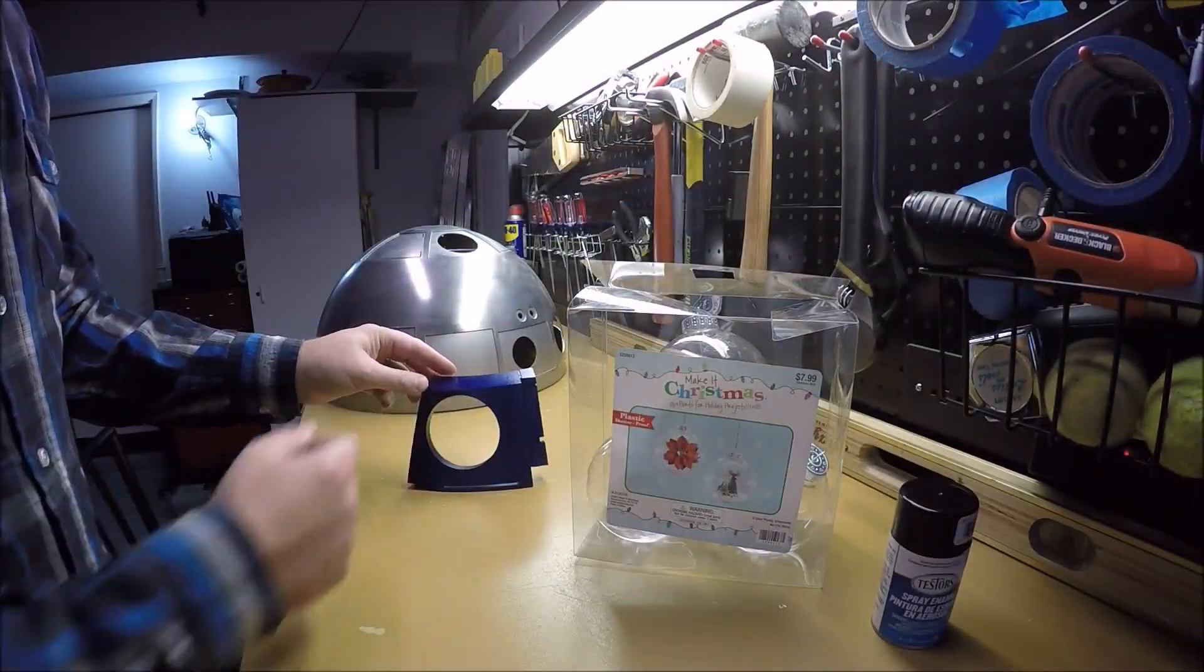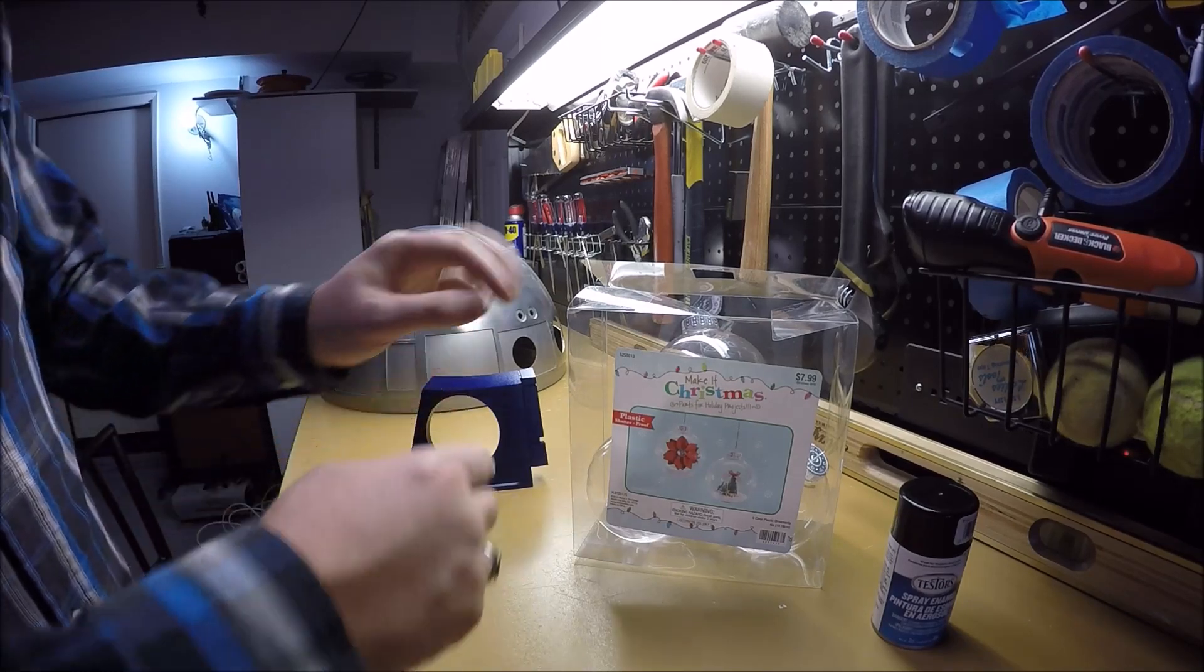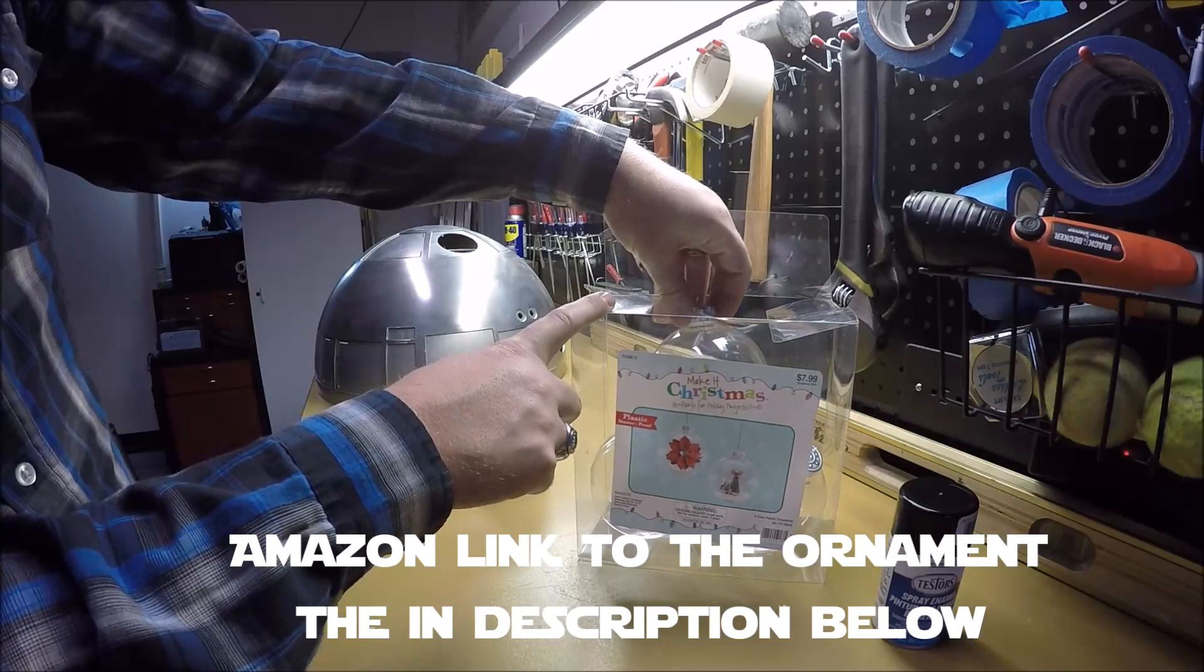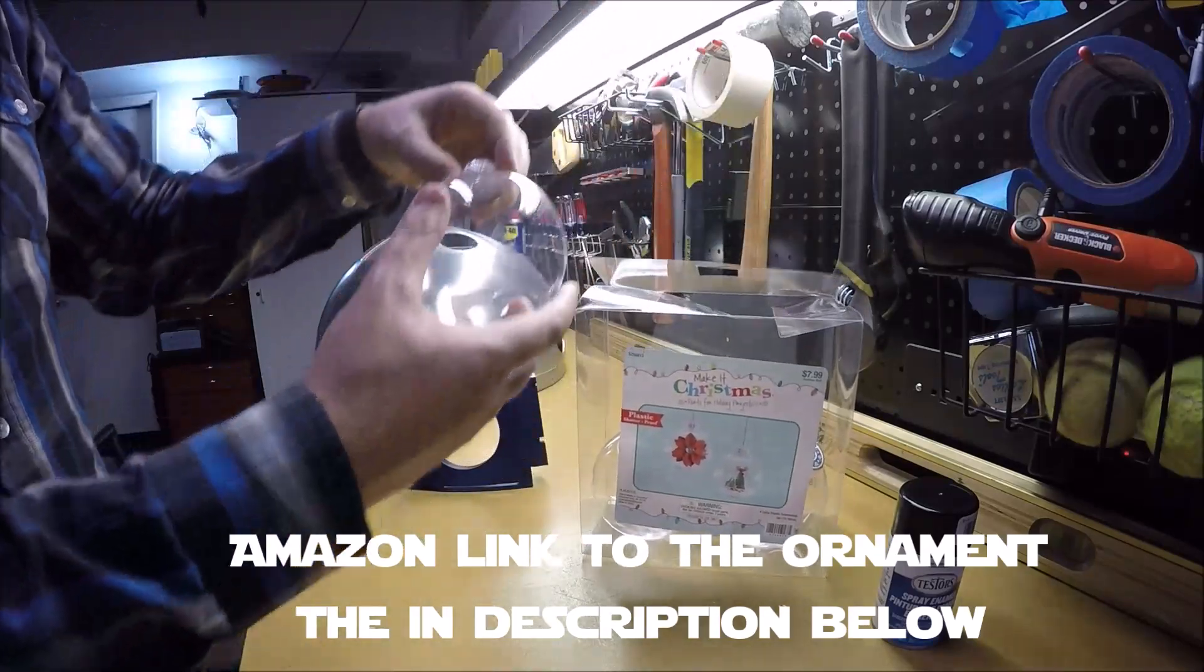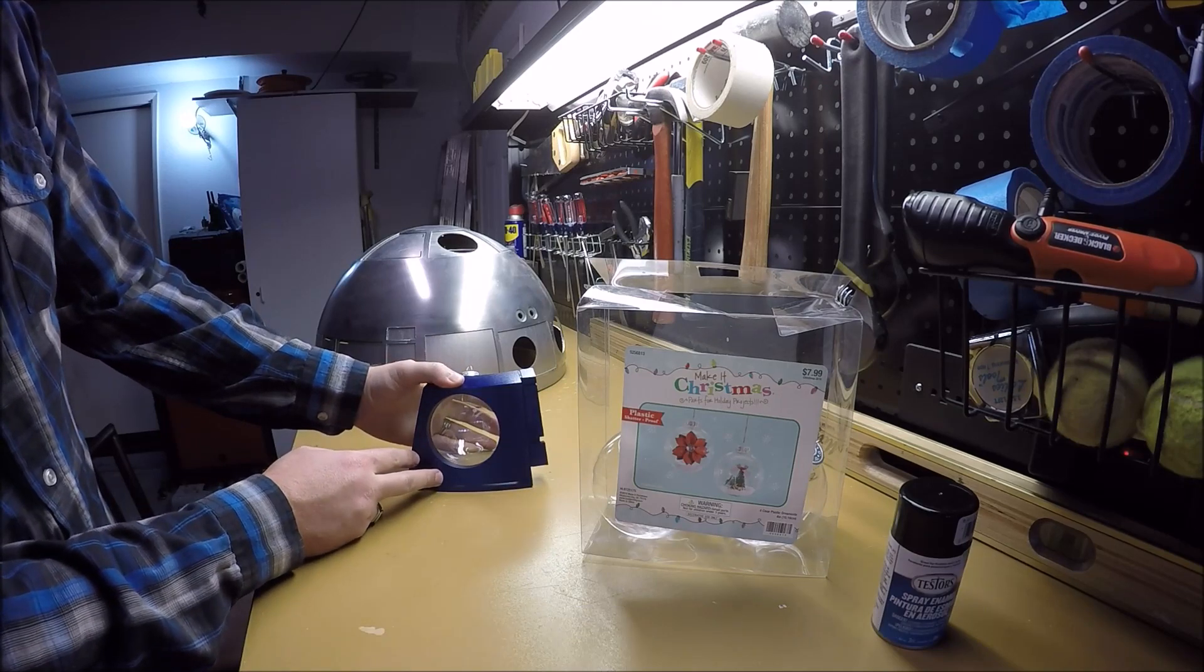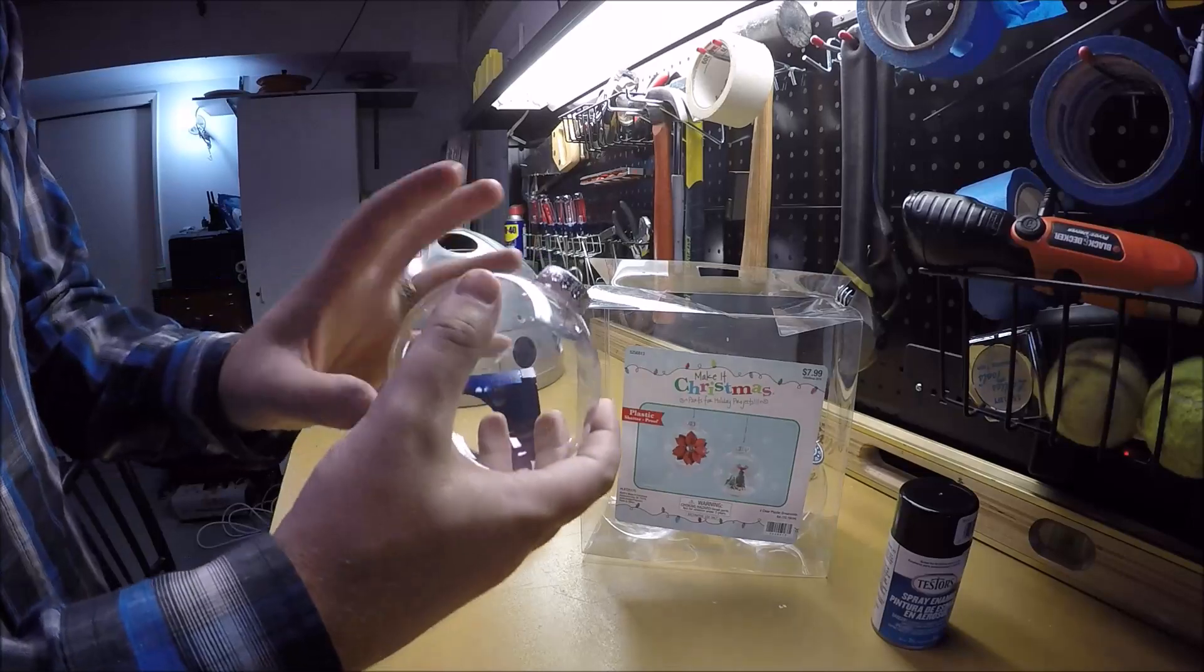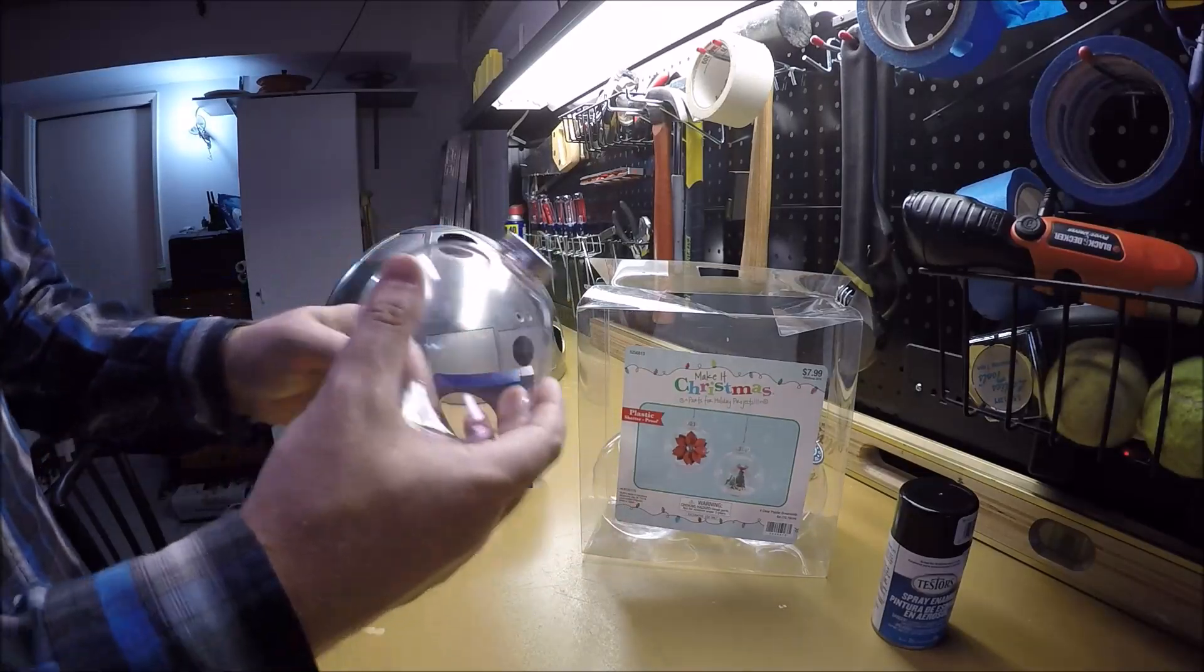So now the next step is getting the actual eye portion put in there. I went to the local craft store and picked up some clear four inch Christmas ornaments. You can see here, it will fit very nicely once we've trimmed it down to the correct size. So what I'm going to first do is, because it's a solid ball that doesn't come apart, I'm going to have to cut it in half.